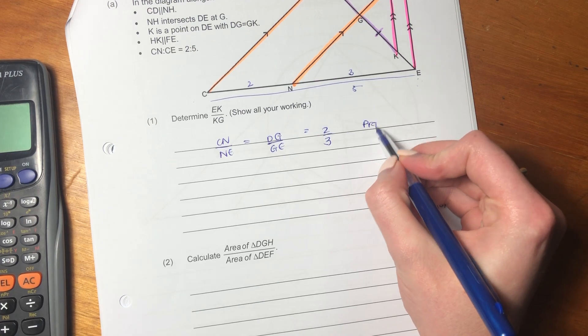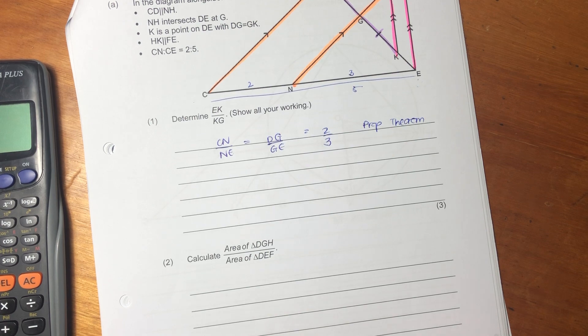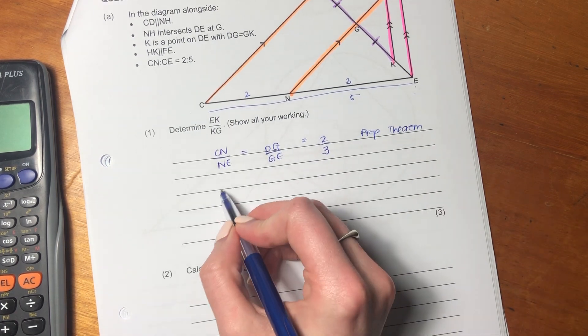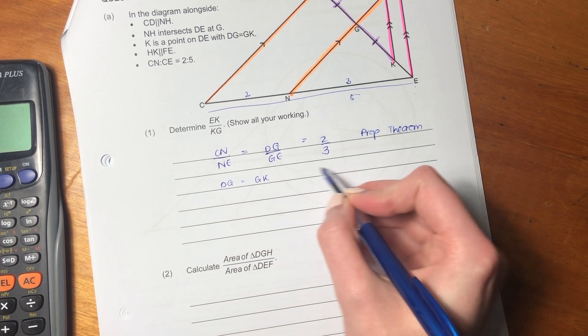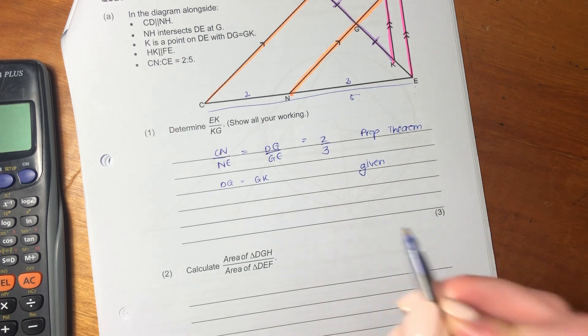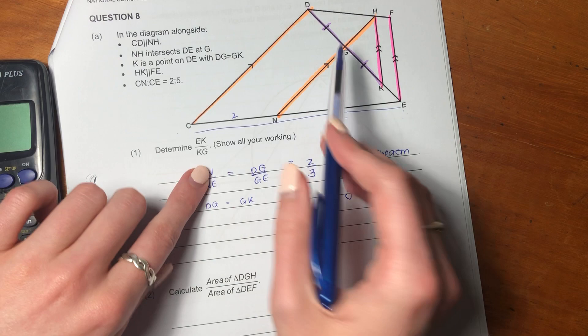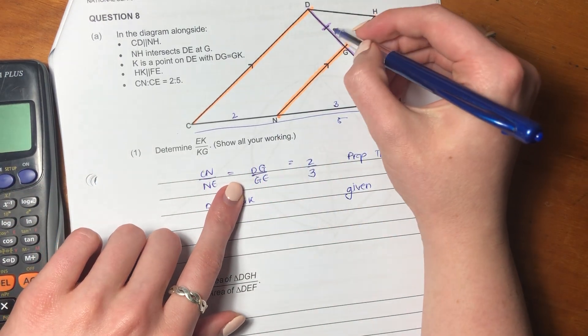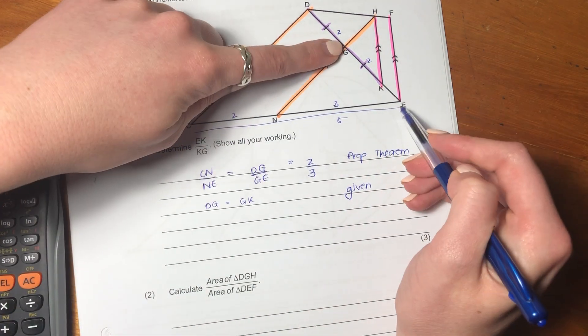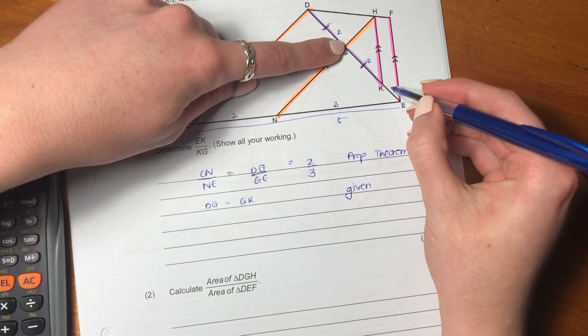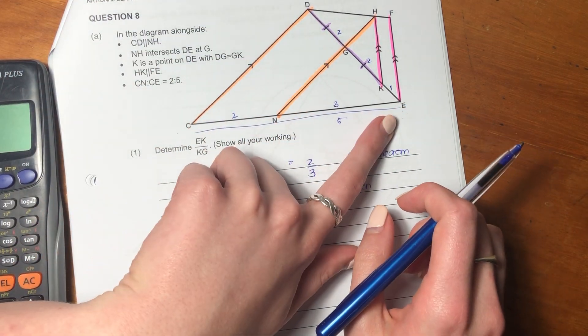So I'm going to say prop theorem. Then we're going to say, but we also know, we're given this, that DG equals GK, and that's given. So we know that if that equals 2, which we've said it equals, so if we're doing proportions now, if that equals 2, then that also equals 2. But we know that whole side equals 3, therefore that has to equal 1 in order to keep that ratio.